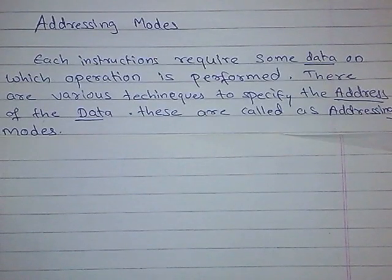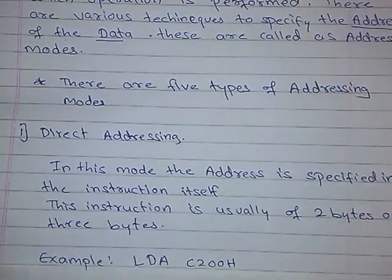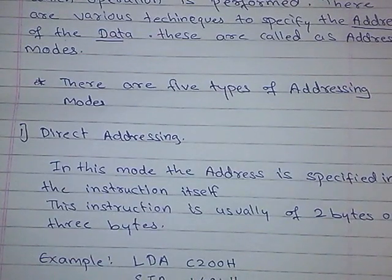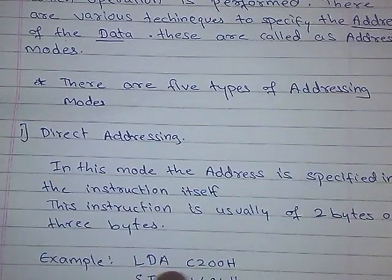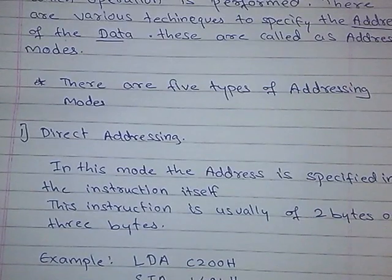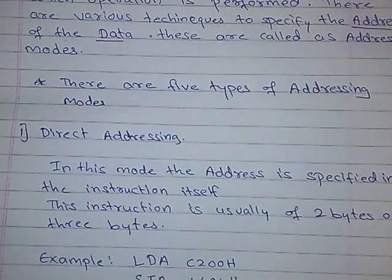There are 5 types of addressing modes. The first addressing mode is direct addressing mode. In this addressing mode, the address is specified in the instruction. For example, here C200H is a memory location. It is specified in the instruction LDA C200H, or here in STA 1401. So this address is given in the instruction itself — we can say that it is a direct addressing mode.